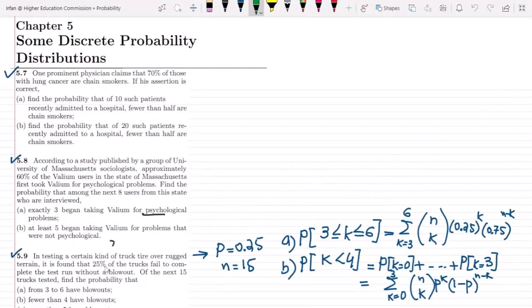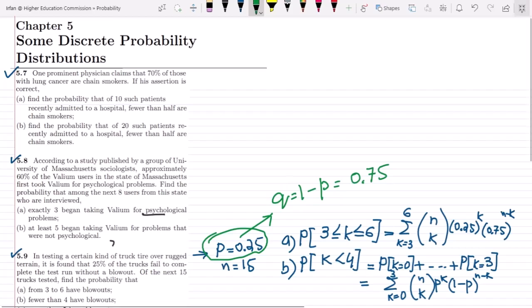So this is question 5.9 and here we can see that in testing a certain kind of truck tire on rugged terrain it is found that 25 percent have blowouts. So p is 0.25 and q is 1 minus p. So 1 minus p is 0.75. So these values are known here. So let us move back to our question.